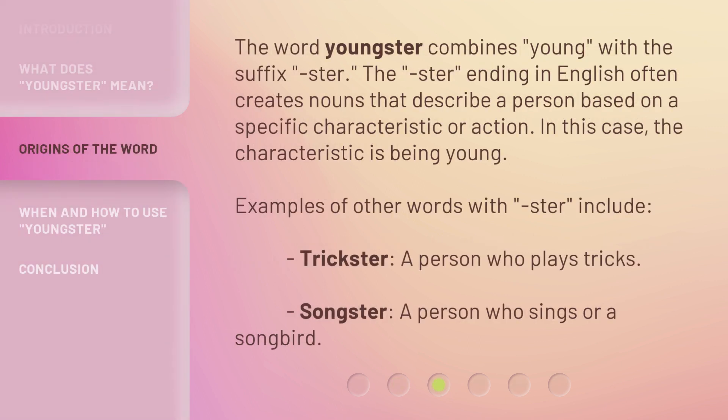The word Youngster combines young with the suffix -ster. The -ster ending in English often creates nouns that describe a person based on a specific characteristic or action. In this case, the characteristic is being young. Examples of other words with -ster include Trickster, a person who plays tricks, and Songster, a person who sings or a songbird.